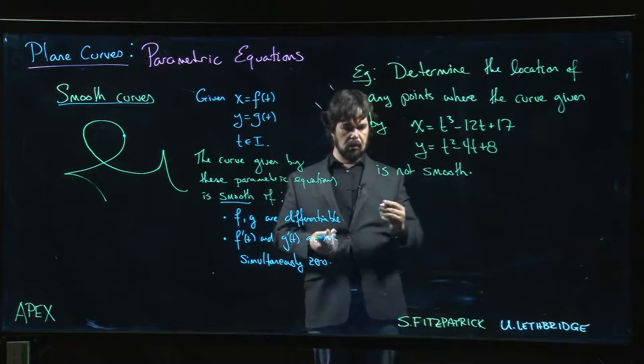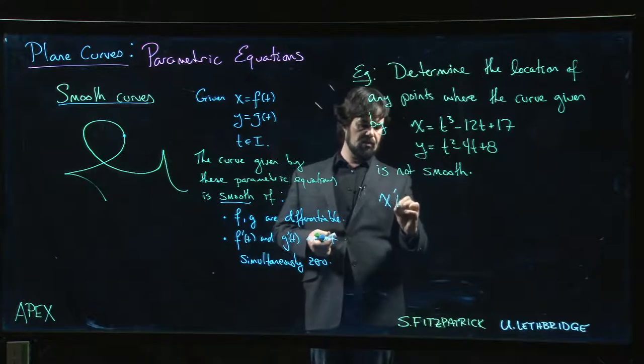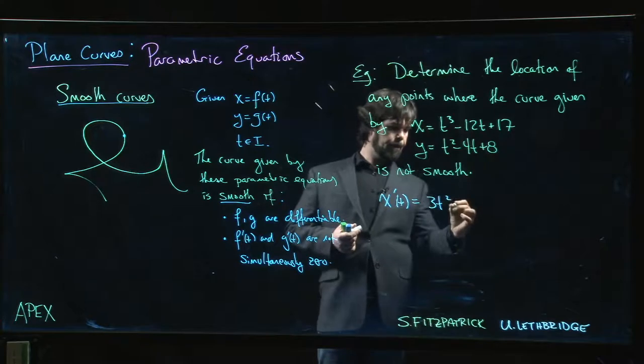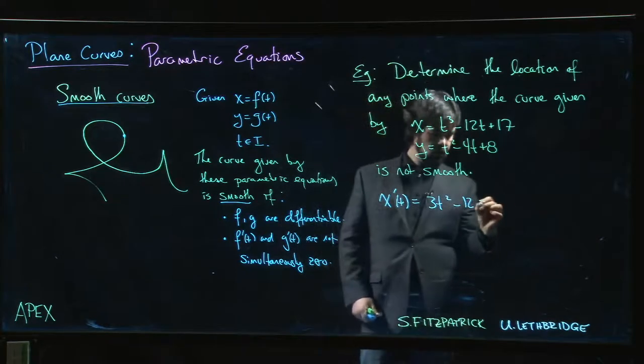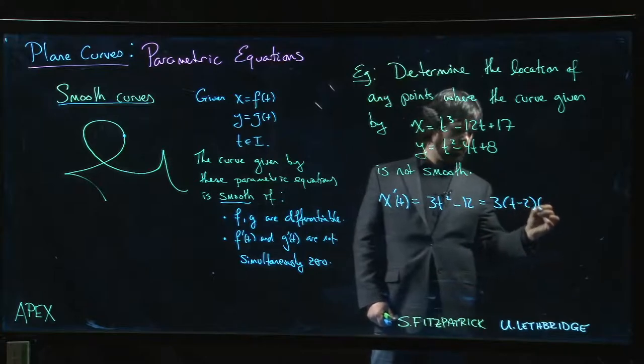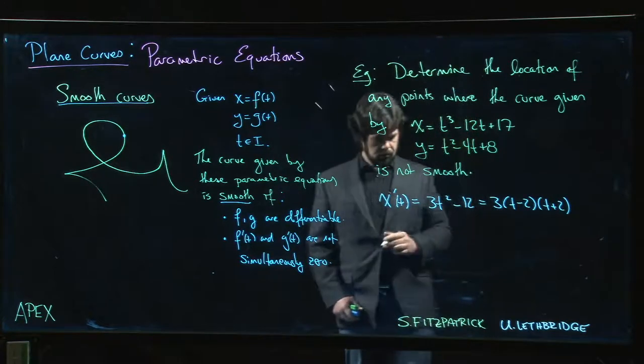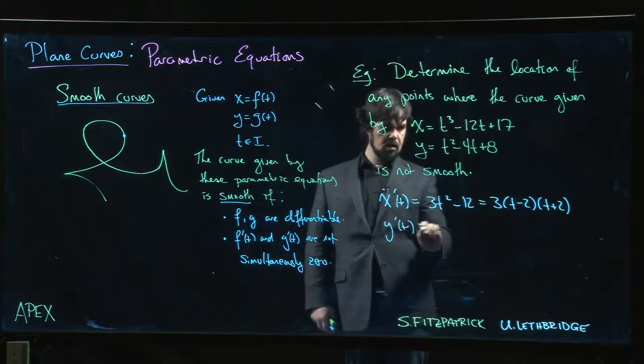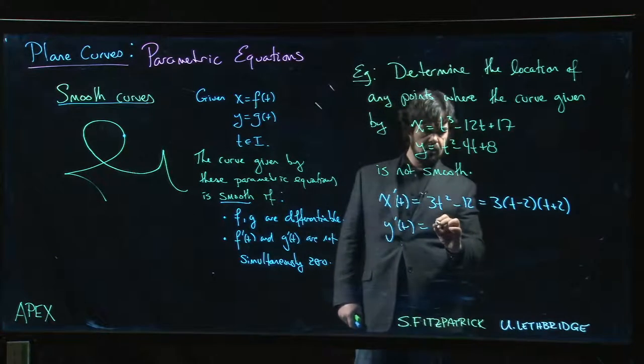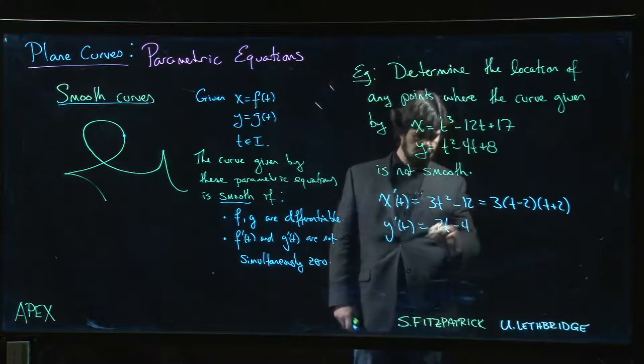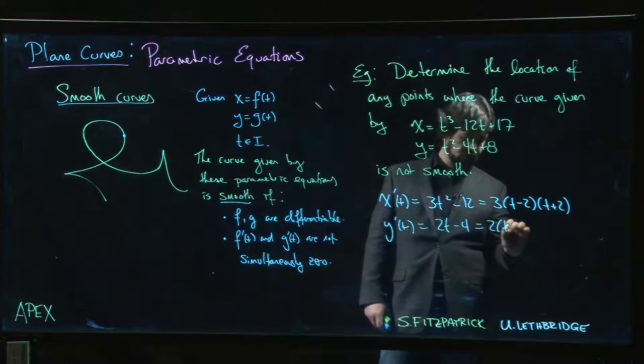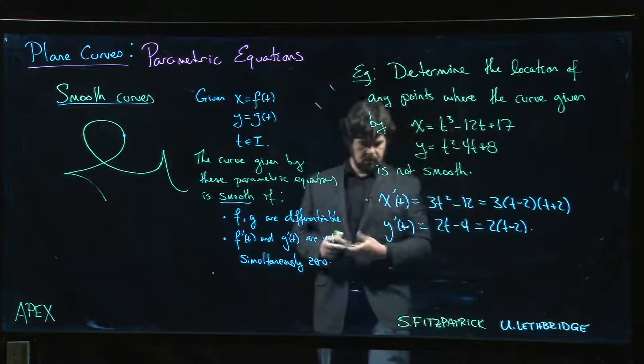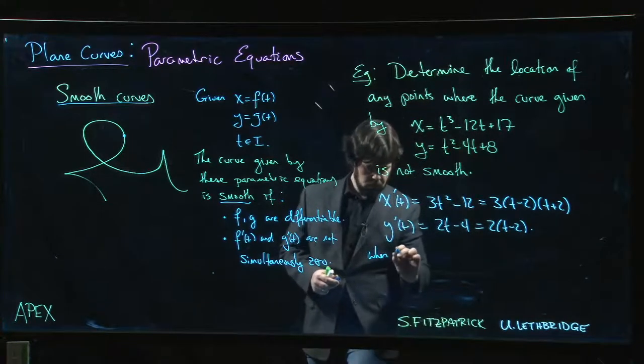Let's see if that happens. X prime of t, we get 3t squared minus 12, and we can factor that as 3 times t minus 2 times t plus 2. Factor out the 3, we get t squared minus 4. Y prime of t, we get 2t minus 4, which is 2 times t minus 2.